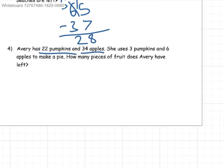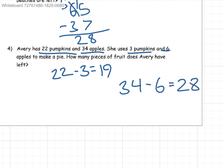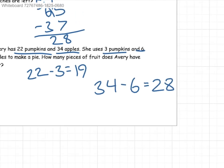Avery has 22 pumpkins and 34 apples. She uses 3 pumpkins and 6 apples to make a pie. How many pieces of fruit does Avery have left? So 22 pumpkins and she uses 3 of them, which means she has 19 pumpkins left. And for apples, 34 minus 6, which means she has 28 apples left.